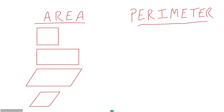For area, sometimes people think of it as length times width, or for a square where all sides are the same, side squared. I like to think of area for quadrilaterals as base times height, because that fits well for all quadrilaterals. For a square, base times height would be side squared, or x squared given the way I labeled it here, so those two are the same thing.